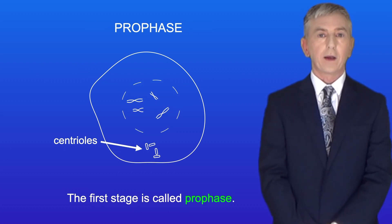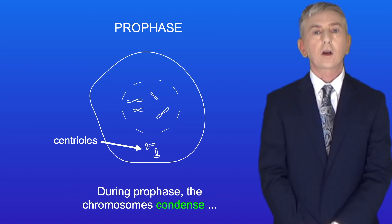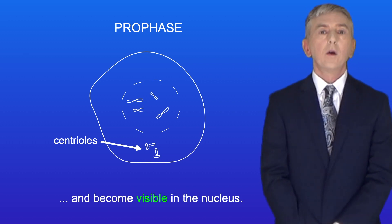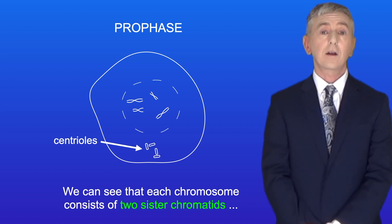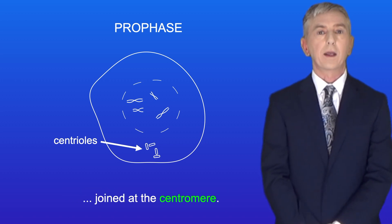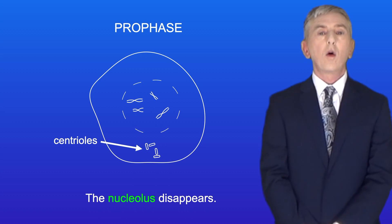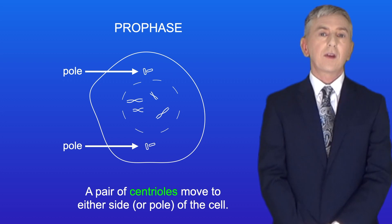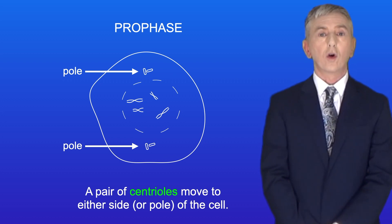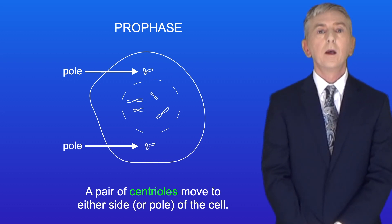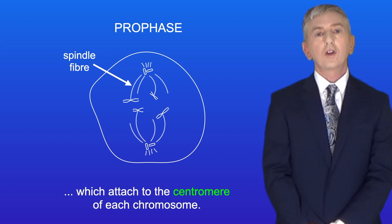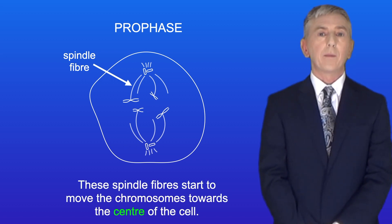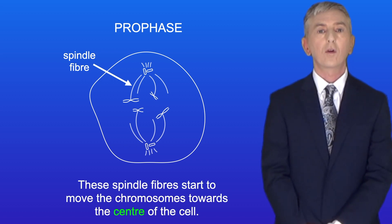The first stage is called prophase. During prophase the chromosomes condense and become visible in the nucleus. We can see that each chromosome consists of two sister chromatids joined at the centromere. The nucleolus disappears and the nuclear membrane starts to break down. A pair of centrioles move to either side or pole of the cell. Proteins begin to form spindle fibers which attach to the centromere of each chromosome, and these spindle fibers start to move the chromosomes towards the center of the cell.